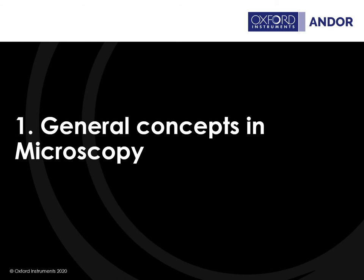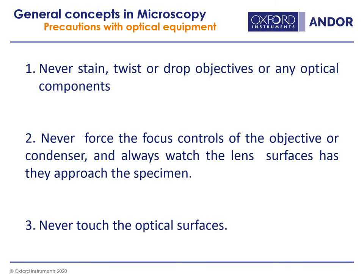Starting from the first part — general concepts in microscopy. Before introducing these concepts, I want to talk about the precautions you need to take with the optical equipment. The optical equipment is prone to damage and is sensitive, and once damaged, you can destroy the quality of your images forever. Never stain, twist, or drop the objectives. Do not force the controls of the condenser, and always watch the lens surfaces as they approach the specimen so as not to irreversibly damage an objective.